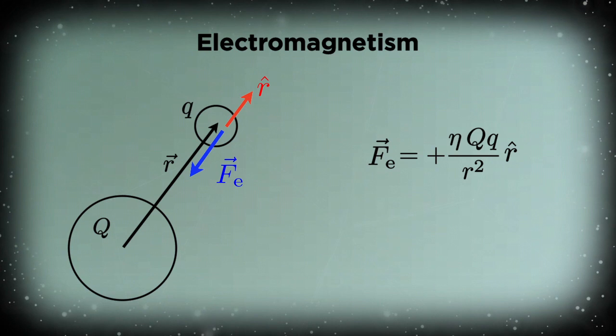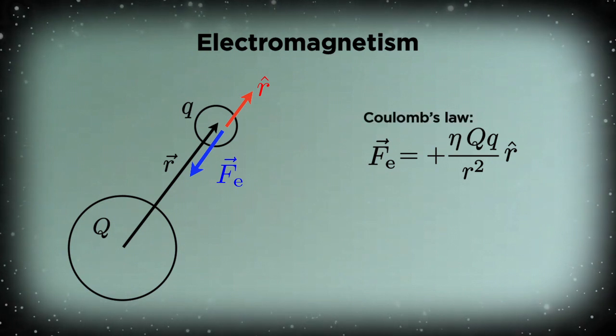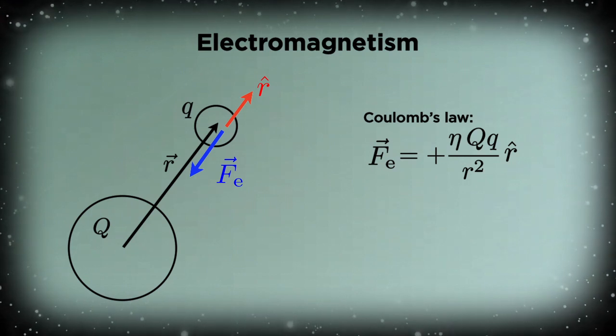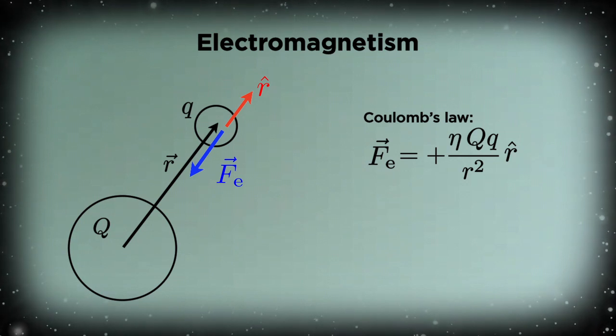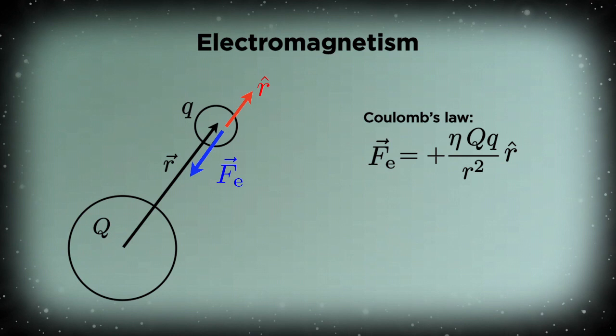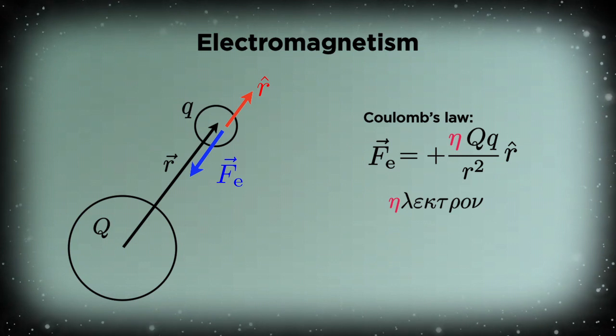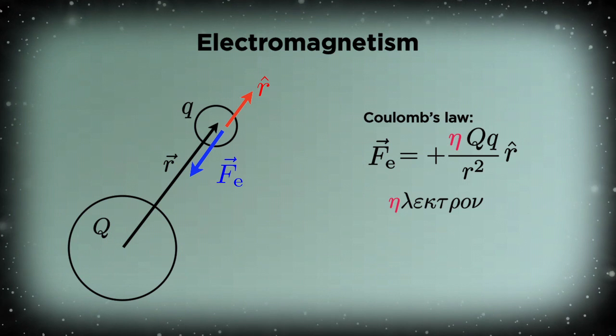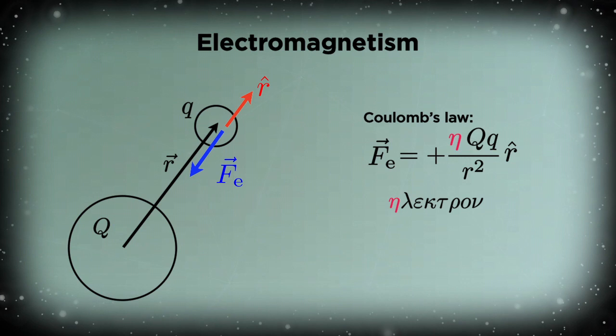Which brings us to the second of the four fundamental forces of nature: electromagnetism. Here, the relevant equation is Coulomb's law, which says that the electric force goes as the product of the charges divided by r squared. So it's very similar in form to Newton's law of gravity. For the proportionality constant, we'll use the Greek letter eta, because the word electric comes from the Greek electron, which starts with an eta.